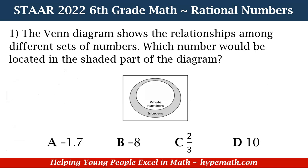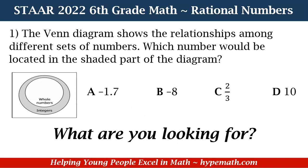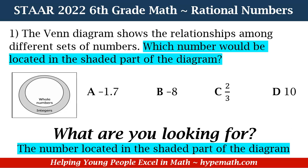Let's dive into our first question. The Venn diagram shows the relationship among different sets of numbers. Which number would be located in the shaded part of the diagram? Looking at our Venn diagram, we see that the gray area says integers, and inside that gray area we have whole numbers. Our answer choices are: A — negative 1.7, B — negative 8, C — two thirds, and D — 10.